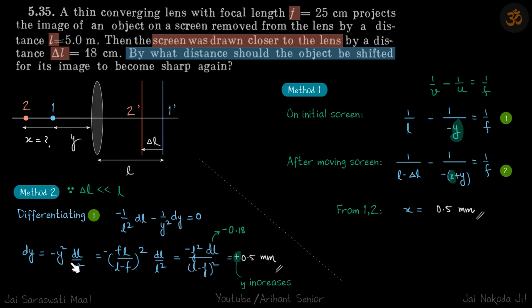So rearranging, we get dy = -y²dl/l². And y, from just this equation only, we will get that to be fl/(l - f). So that is y, so square of that, dl by l². Simplifying that, we get this.